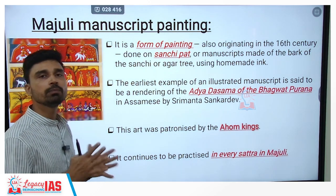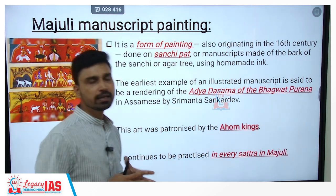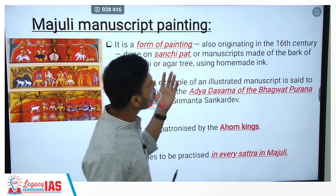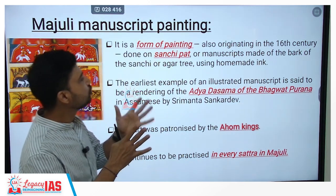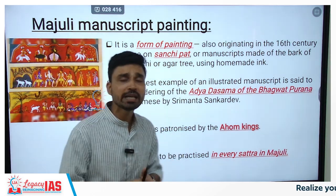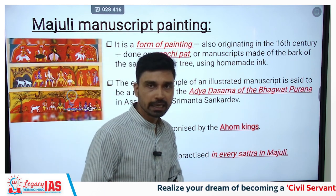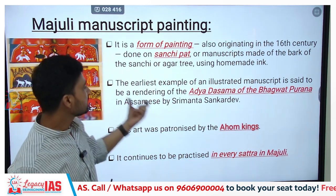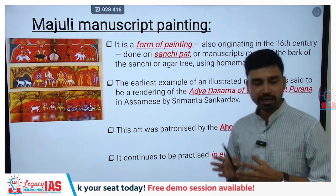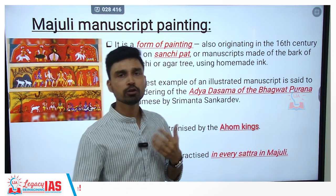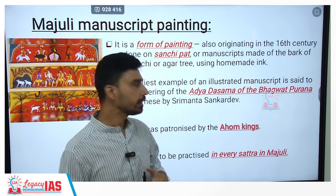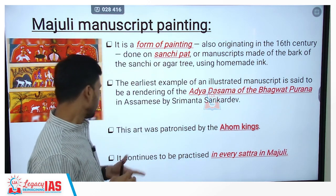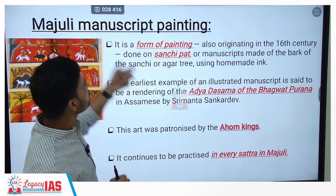Apart from the Majuli mask, the Majuli manuscript painting has also received the GI tag. This is a form of painting that originated in the 16th century AD, done on Sanchi Pat — manuscripts made from the bark of the Sanchi tree, scientifically called the Agar or Aga tree — using homemade ink. The earliest example of an illustrated manuscript is said to be a rendering of the Adya Dasam of the Bhagavat Puran in Assamese by Srimant Sankar Deva himself. This art was patronized by the Ahom kings and continues to be practiced in every Satra in Majuli.